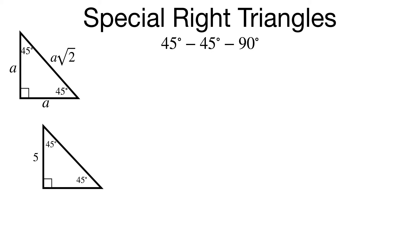In our first example, we have a 45-45-90 triangle, and I know one side is 5, one leg is 5, so the other leg will also be 5 because it's isosceles, and then you just multiply by the square root of 2. So the hypotenuse is 5 square root of 2. It is that easy.